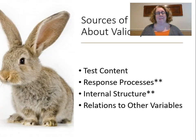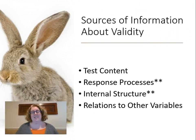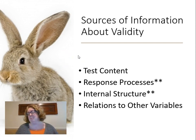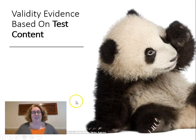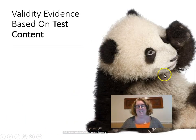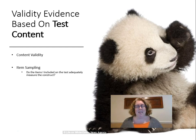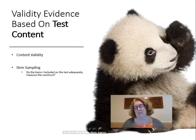There are four sources of information about validity: test content, response processes, internal structure, and relation to other variables. Test content and relation to other variables are the two really important ones we'll spend a lot of time on. So let's talk about test content — validity evidence based upon test content includes content validity, which includes item sampling. Do the items I include on the test adequately measure the constructs?